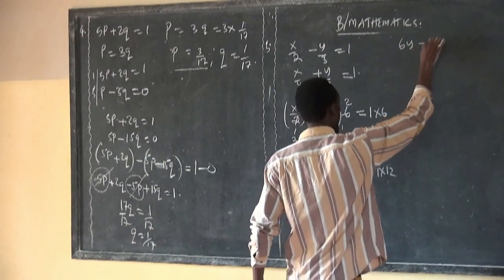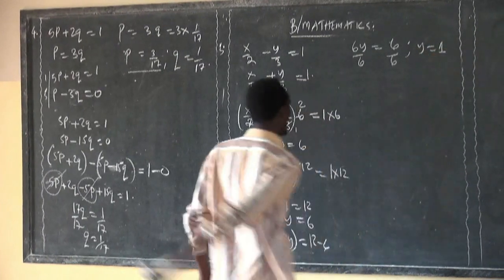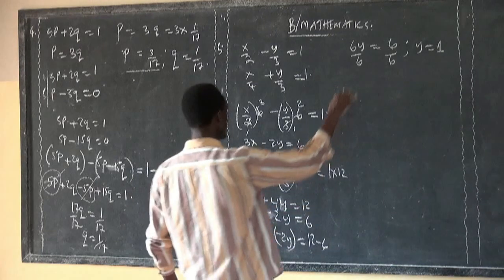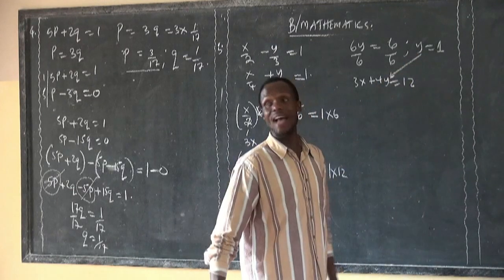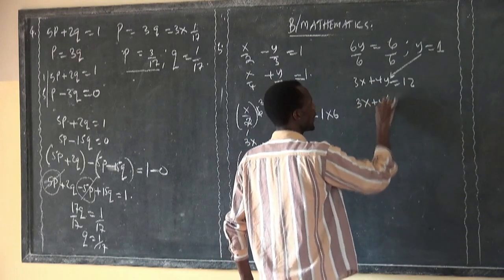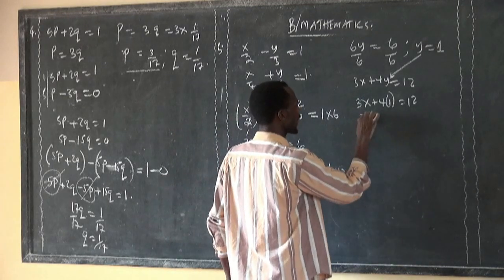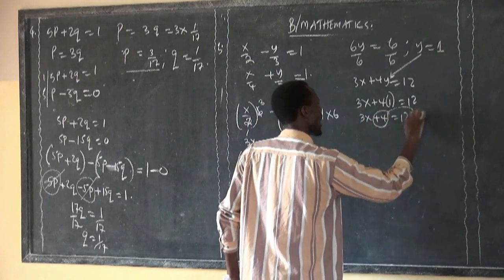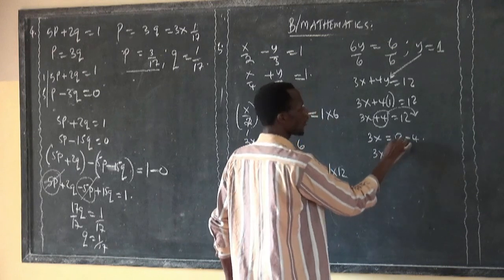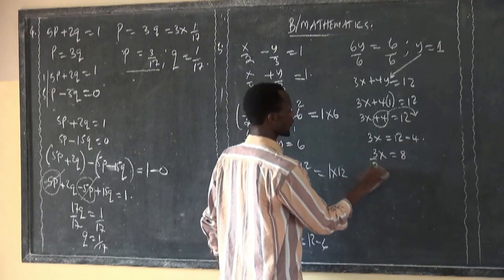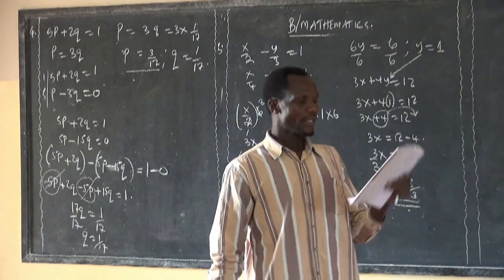Negative times negative gives positive 2Y, so 4Y plus 2Y equals 6, giving 6Y equals 6. Dividing by 6, Y equals 1. Now choose one of the equations. From 3X plus 4Y equals 12, with Y equal to 1: 3X plus 4 times 1 equals 12, so 3X plus 4 equals 12. Taking 4 to the other side: 3X equals 8. Dividing by 3: X equals 8 over 3.